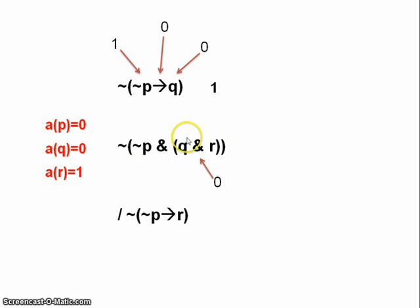And then since this part of this larger conjunction is false, this whole thing is a conjunct of this larger conjunction, since this conjunct is false, this whole thing must be false. But again, look, it's negated. So that means that our whole formula here is true.